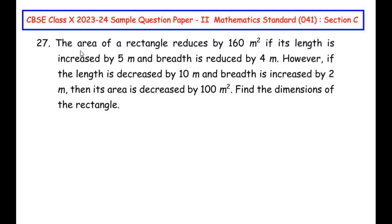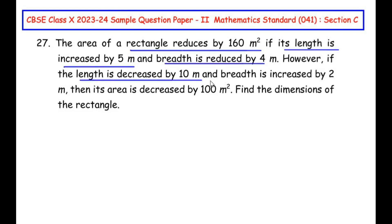The area of a rectangle reduces by 160 square meters if its length is increased by 5 meters and breadth is reduced by 4 meters. However, if the length is decreased by 10 meters and breadth is increased by 2 meters, then its area is decreased by 100 square meters. Find the dimensions of the rectangle.